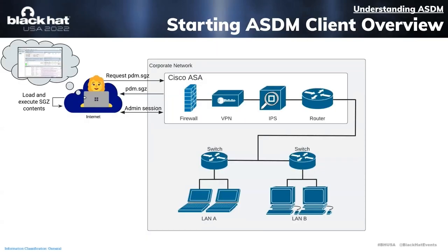For about the next 20 slides, it's important to understand how the ASDM client and the ASA communicate. One of the first things that happens is the ASDM client makes an HTTP request for a pdm.sgz file. This file is hosted on Cisco ASA's web server, downloaded by the client, and then unpacked. The SGZ format is non-standard, but what the client finds inside is a whole bunch of Java classes, which it loads into memory and executes, establishing the full administrative session. The fact that the SGZ file contains much of the client's functionality will be important in a bit.